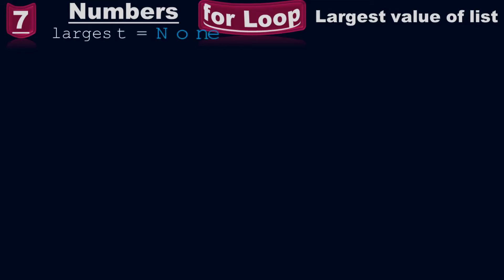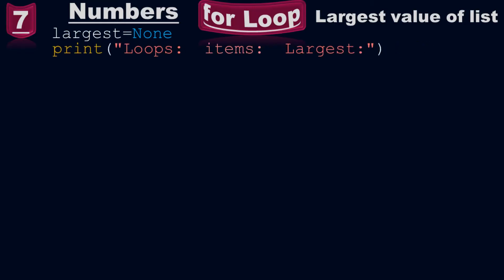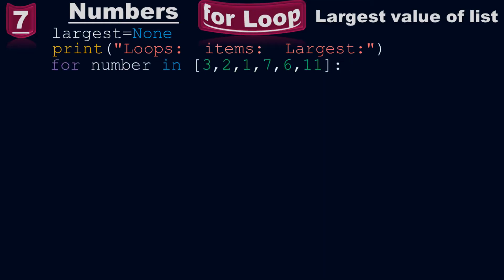Initially, largest equals to none. So at the very first stage, at the initial stage, there is no largest value — it is unknown. Then print of 'loop: items: largest:' and for number in [3, 2, 1, 7, 6, 11].